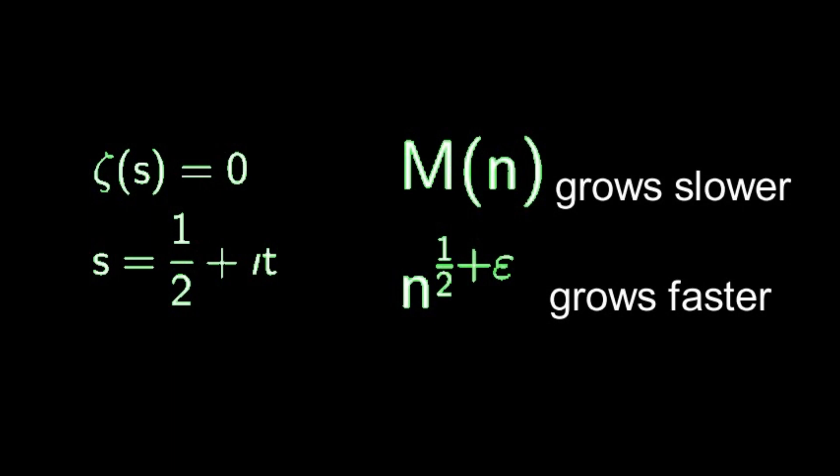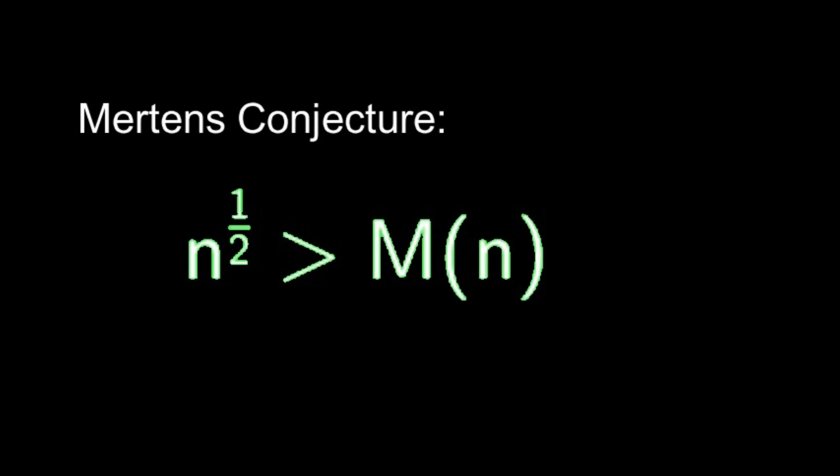If the Riemann hypothesis is true, if the zeros of the zeta function lie on the real line one-half, then any polynomial n to the k, where k is greater than one-half, must grow faster than the Riemann zeta function. So the Mertens conjecture clearly implies the Riemann hypothesis, since the function cannot even grow faster than k equals one-half itself.